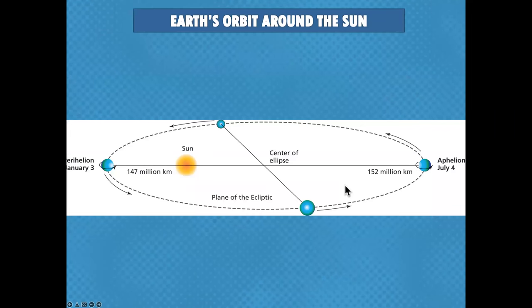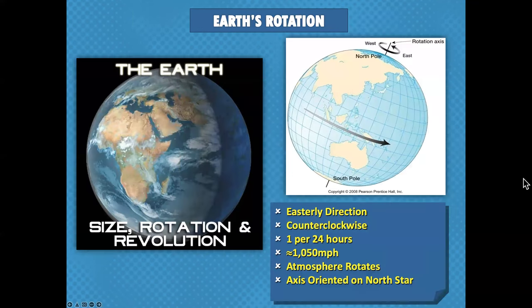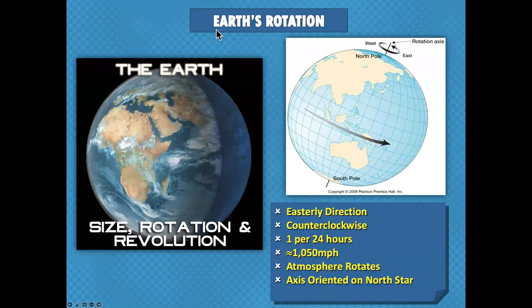We have to begin by understanding the Earth and its relationship to its star. The Earth has a pretty circular orbit but it is slightly more elliptical than circular. The Earth is closer to the sun in January and farther away in July, yet January is our winter and July is our summer — so that difference doesn't really affect the climate as much. What does is the fact that the Earth is tilted on its axis — about 23.5 degrees from vertical.